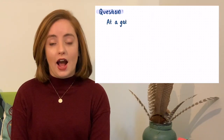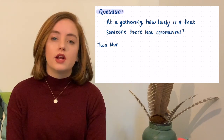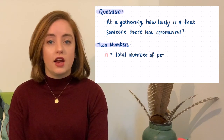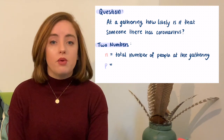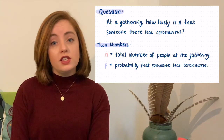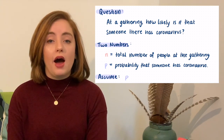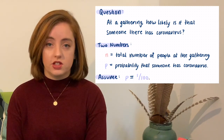So the question we want to answer is: at a gathering, how likely is it that someone there has coronavirus? To answer this, we're going to need two numbers. N is going to stand for the number of people at the gathering. P is the probability that a randomly selected person in your community has coronavirus. For this video, we're going to take p equal to 1 out of 100, so that means 1 out of every 100 people has coronavirus. In reality, this number depends on a lot of factors, such as where you're living and whether or not the people in your community are social distancing.